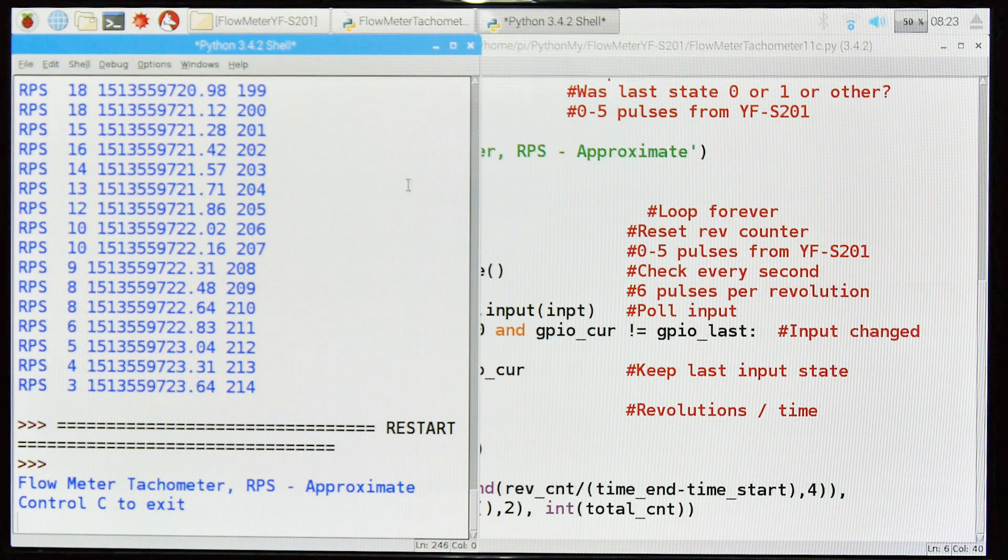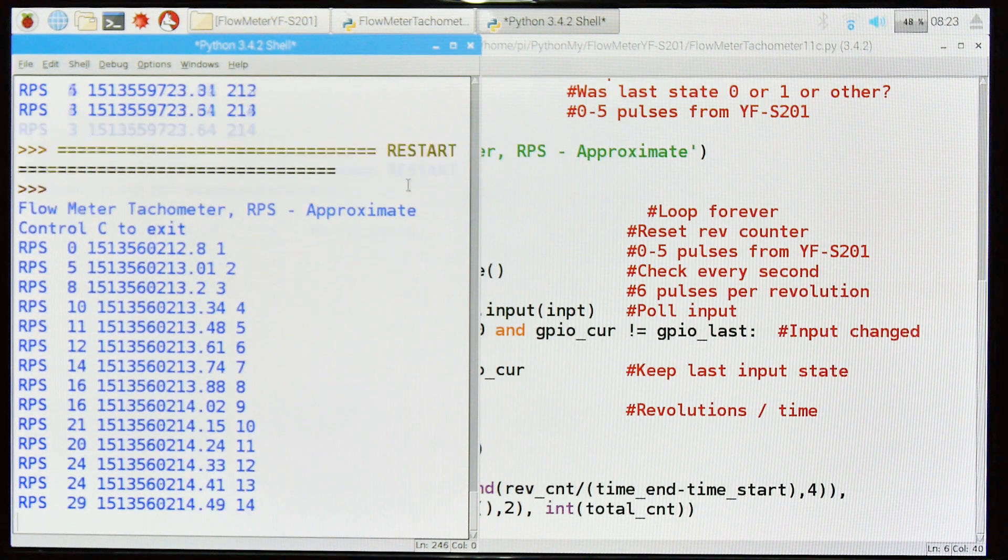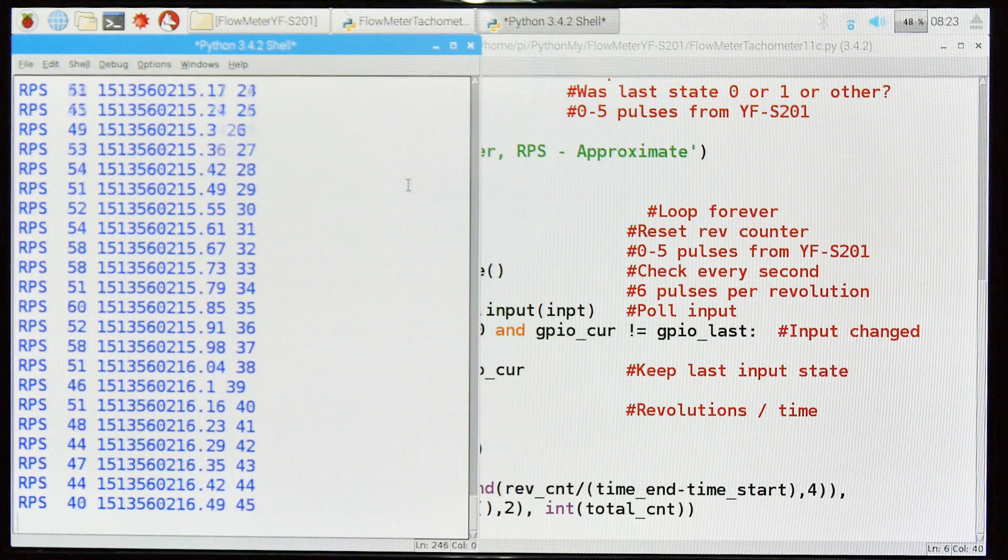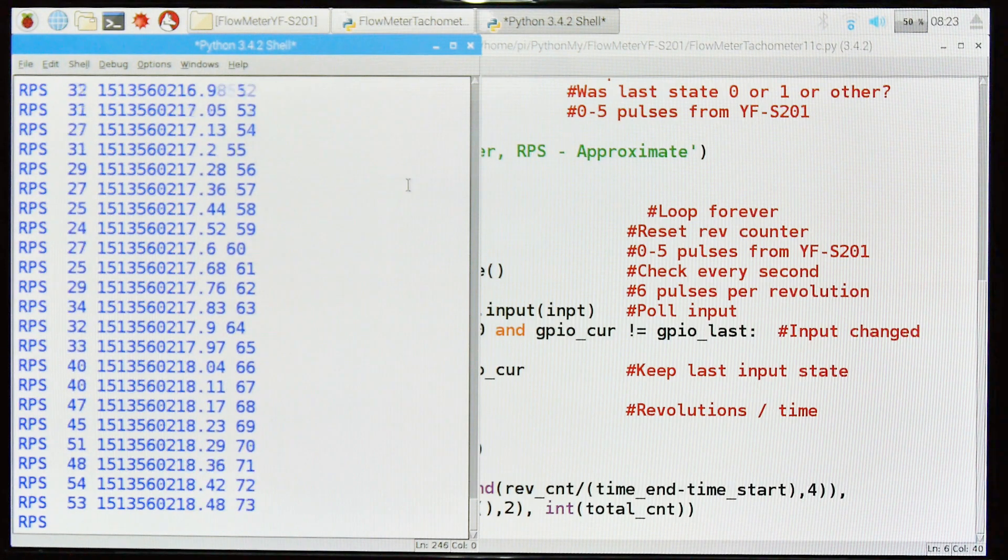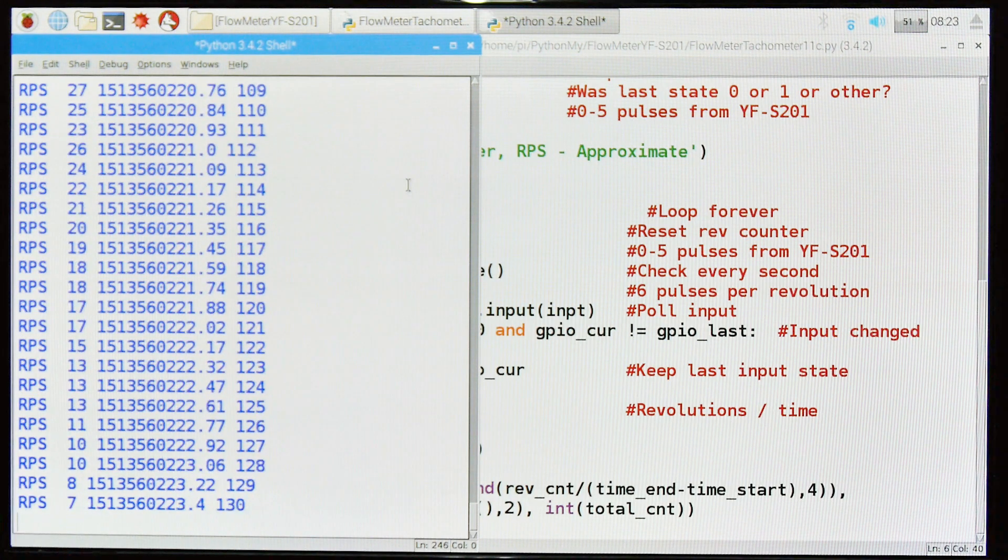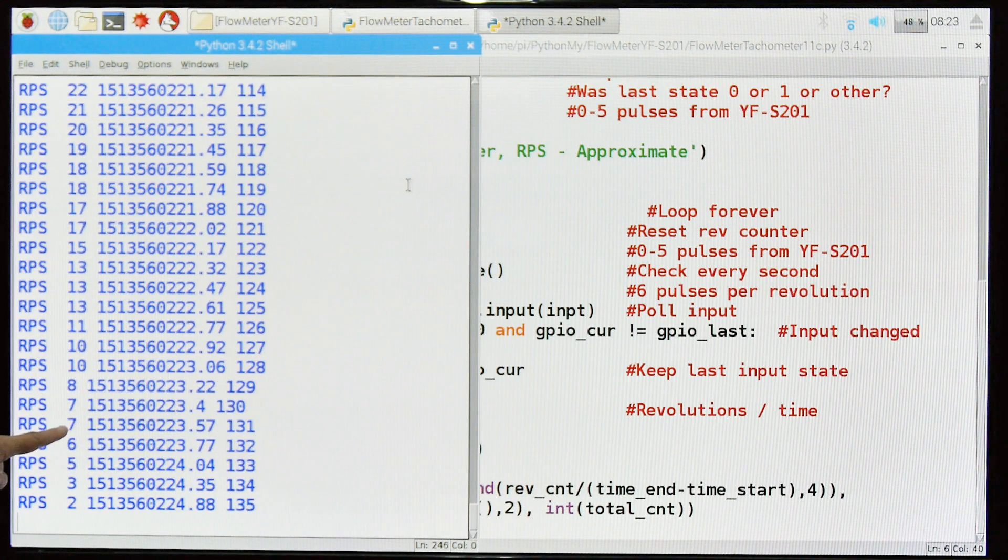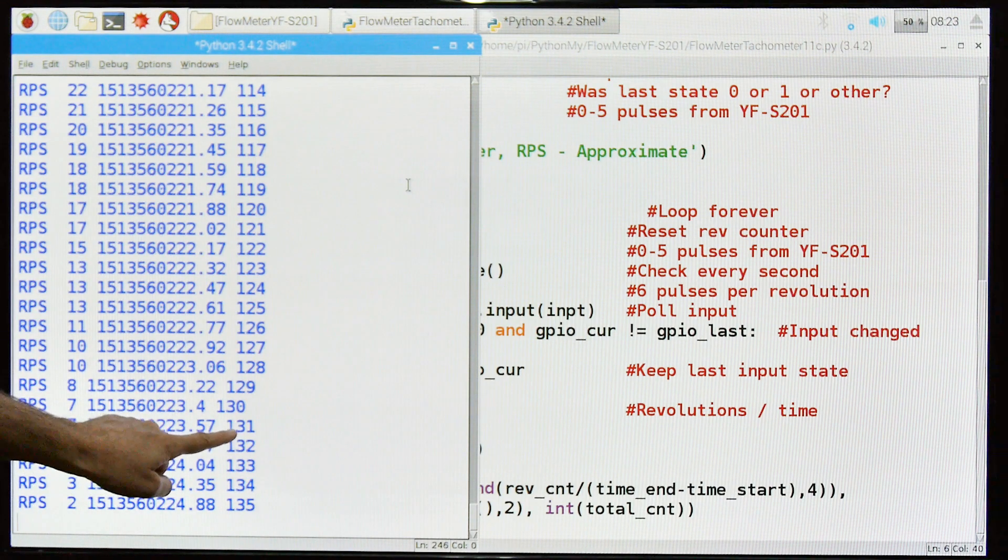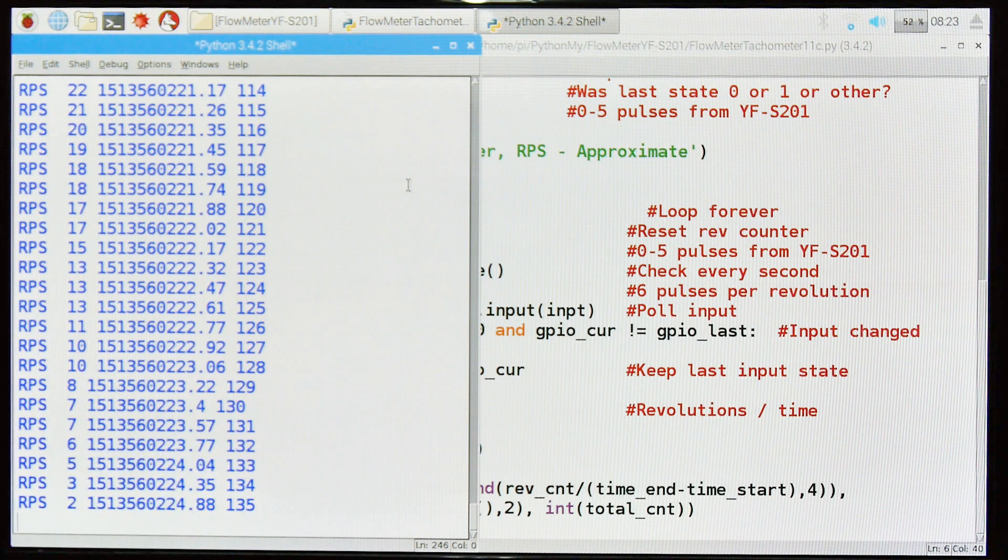Speeding up, slowing down. I over revved it. So here we have the first number is revolutions per second, this is the time elapsed between readings, and this is the total number of revolutions we did for the whole thing.